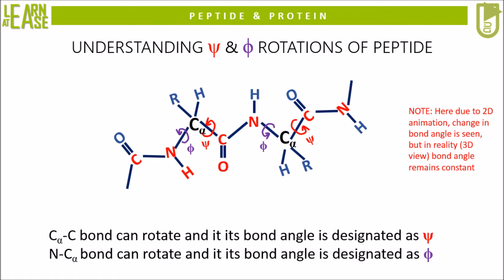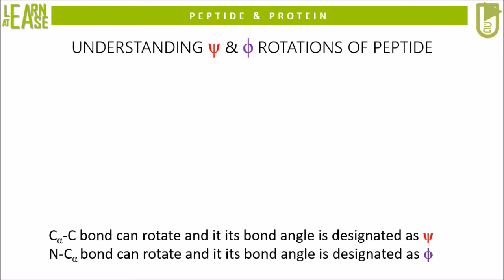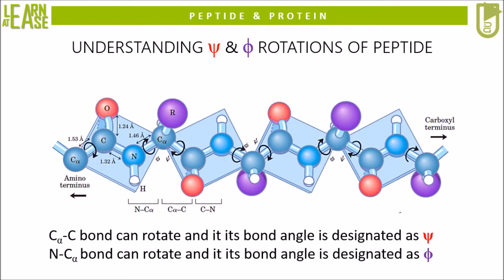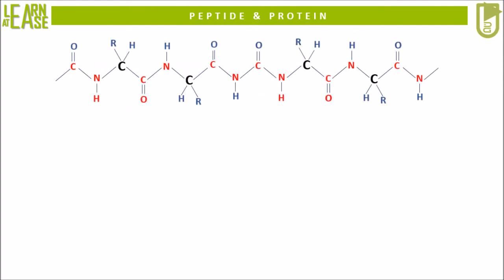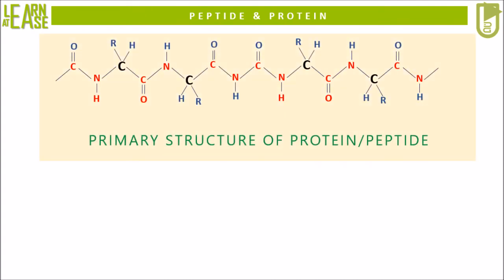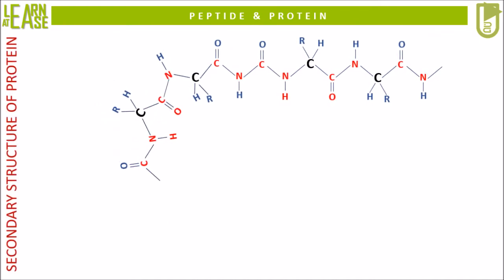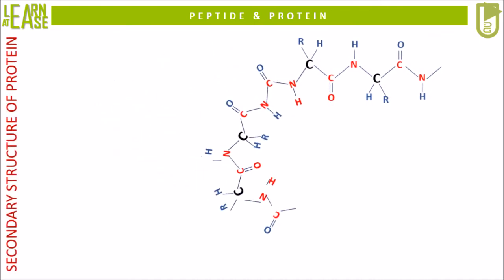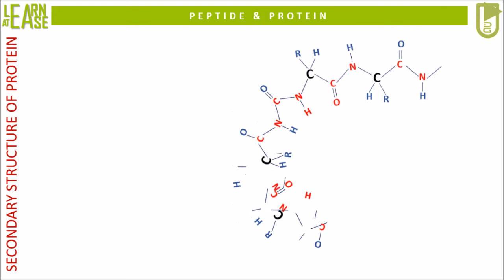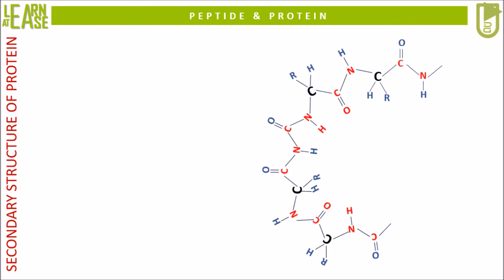In the two-dimensional animation, the bond angle seems to be changing, but in reality the bond angles remain constant — bonds only rotate. In the animation, a linear peptide is illustrated. Linear peptide also means peptide is in its primary structure. If the peptide bonds rotate by psi and phi rotation, the peptide will not remain linear. The new 3D configuration attained by peptide bond rotations is called the secondary structure of protein.